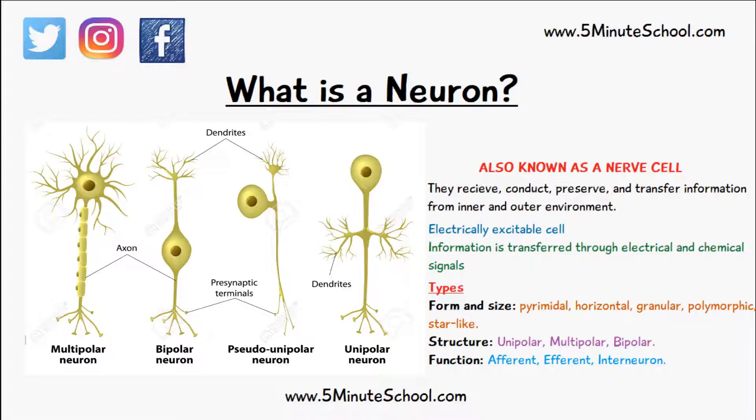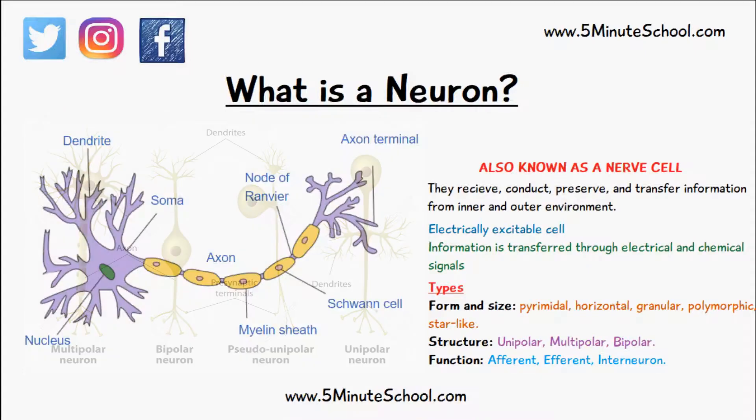Bipolar neurons are spherical in shape and they have one axon and one dendrite. They're usually located in the eyes, specifically in the retina.